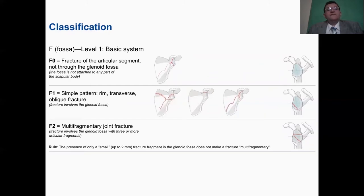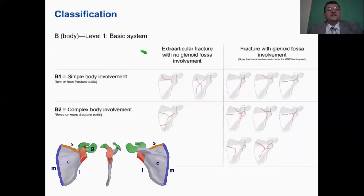The fossa body, the fossa, which is the glenoid surface, is divided into F0, which the articular segment has no fracture across it, which is basically a neck fracture, while an F1 has a simple pattern running across the glenoid, while F2 is more than one fracture line crossing through the glenoid.